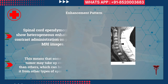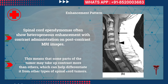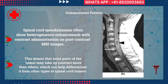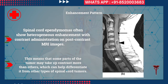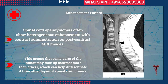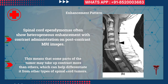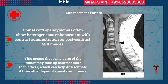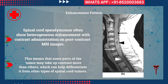Post-contrast images are very important for the diagnosis of spinal cord and brain tumors. Spinal cord ependymomas often show heterogeneous enhancement with contrast administration on post-contrast MRI. This means that some parts of the tumor may take up contrast more than others, which can help in differentiating it from other types of spinal cord tumors.